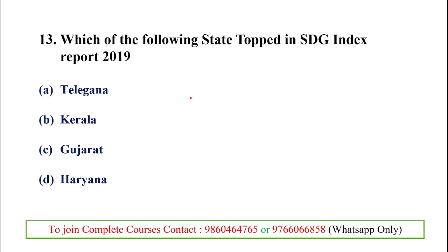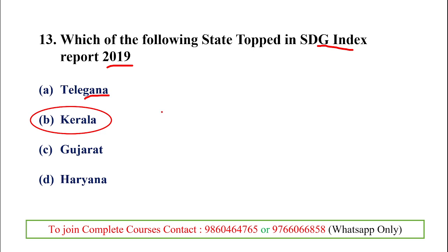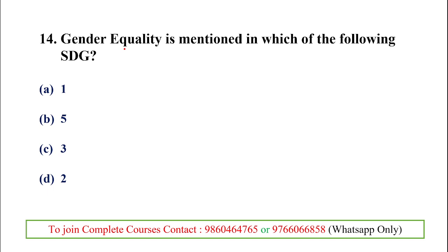Regarding the SDG Index Report 2019: Kerala is the state that topped the SDG Index in 2019. Telangana is the youngest state to top the SDG Index. India is ranked 57th in the SDG global rankings. Within India, Gujarat holds 4th place. Telangana is the youngest state to have topped the index.